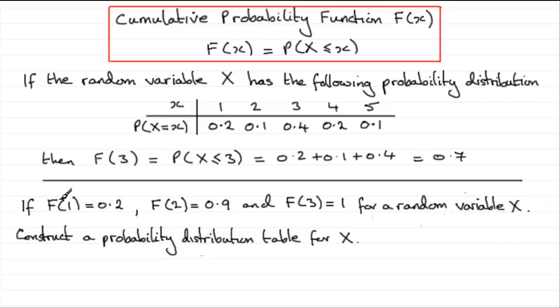If we've got a cumulative probability function f of x, such that f of 1 equals 0.2, f of 2 is 0.9, and f of 3 is 1, and this is defined for a random variable x, what we've got to do is construct a probability distribution table for our random variable x. How are we going to do this?